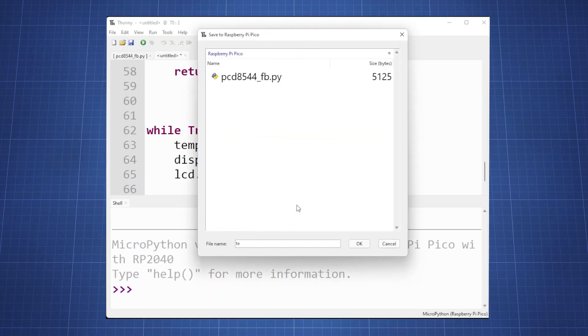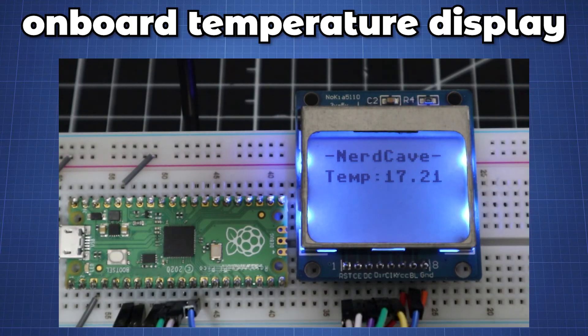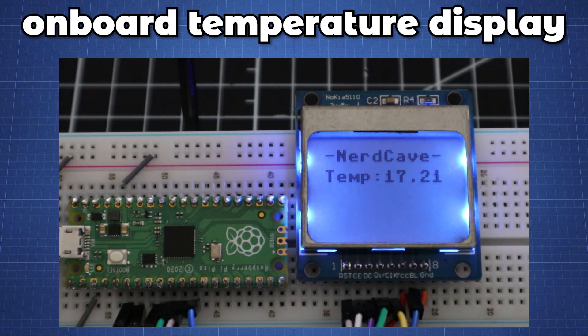Now just upload this code to the pico and here we have the raspberry pi pico reading the temperature with its onboard temperature sensor and displaying it on the nokia 5110 screen.